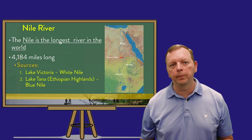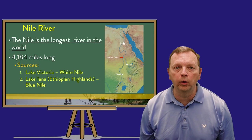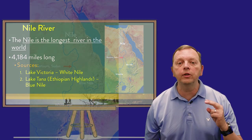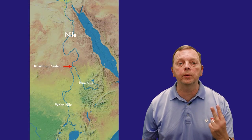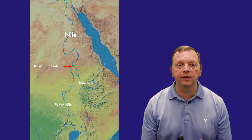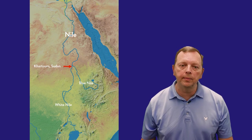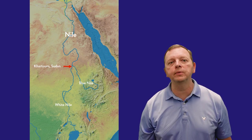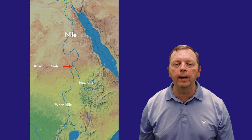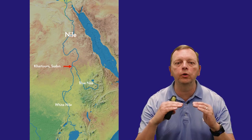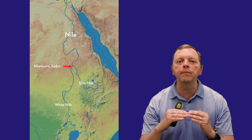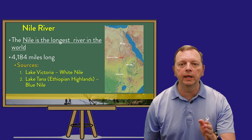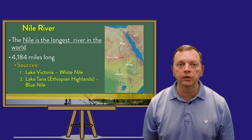Providing water to the people of the east is the Nile River, which is the longest river in the world. The Nile has two tributaries that feed into it. The Blue Nile comes out of the Ethiopian highlands, and the White Nile comes out of Lake Victoria. Both these tributaries come to Khartoum, Sudan, and combine to become the Nile River, flowing into the Mediterranean Sea.